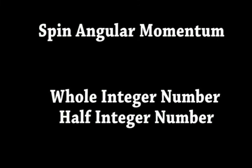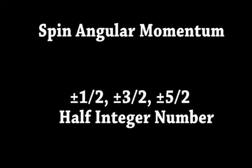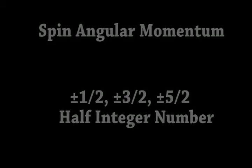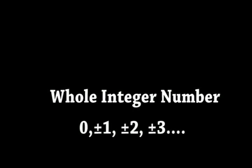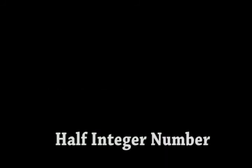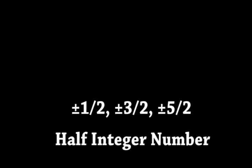Spin momentum acts in the same way, except that its quantum numbers l and m can be both full integer numbers or half-integer numbers. Half-integer numbers are numbers like plus or minus 1/2, plus or minus 3/2, plus or minus 5/2, and so on — zero is not a half-integer number. If l is an integer number, then m also has to be an integer. If l is a half-integer number, m can only be made up of half-integers.